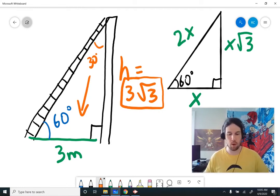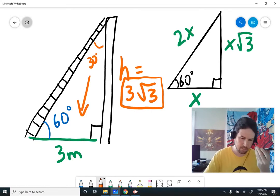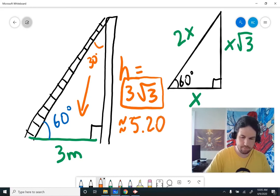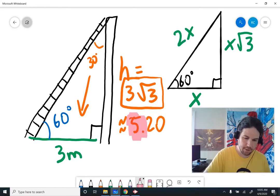And if we want a, this is a word problem, this is a practical application, so a rounded-off decimal is definitely appropriate. Hey Google, what is 3 times the square root of 3? The answer is approximately 5.196152. 5.20, and that's our answer. Oh, meters.